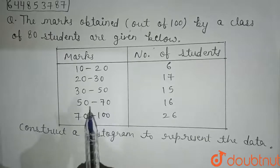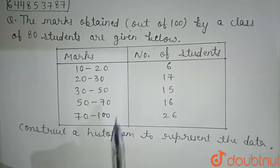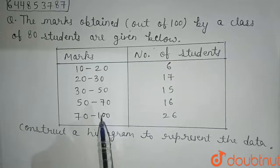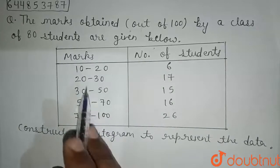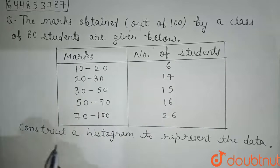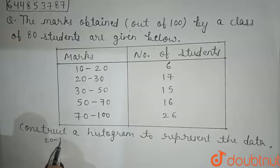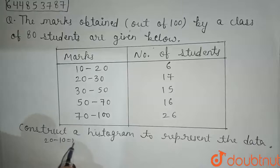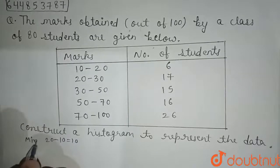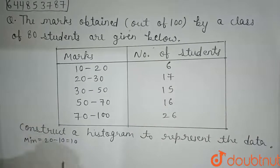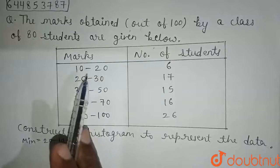Now we shall first compute adjusted frequencies for each class. The minimum class size here is 20 minus 10, which equals 10. So this is the minimum class size.